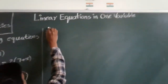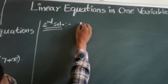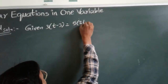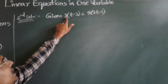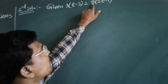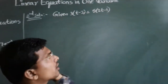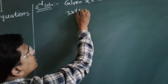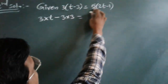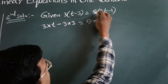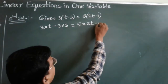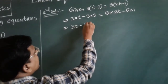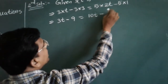Second solution: 3 times of t minus 3 is equal to 5 times of 2t minus 1. First, multiply 3 with the bracket terms on the left, and multiply 5 with the bracket terms on the right. So 3t minus 9 equals 10t minus 5.